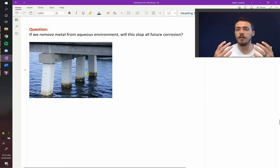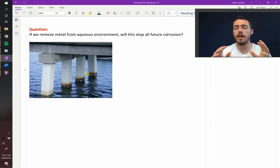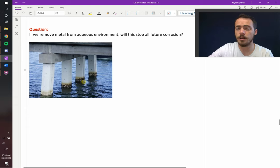In the galvanic cell pictures we showed you previously, there was always a metal in a solution, a metal in a solution, a salt bridge, and the wire connecting them. So what if we did get rid of the solutions? Will that fix our problem? Maybe you've seen this in piers. They certainly seem to be mostly corroded below the water line and not above. So will that stop all corrosion?